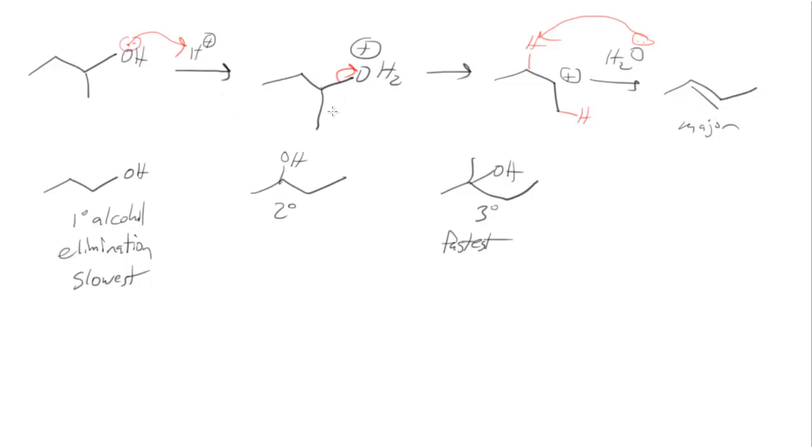This reaction where we do an elimination of water from this molecule is actually called a dehydration reaction. It's really just the elimination mechanisms that we saw last chapter. In this case we're eliminating water instead of a hydrogen and a halogen. So we're losing OH off of one part of the molecule and H off the other part of the molecule. So OH and H that's the H2O that we're going to eliminate.